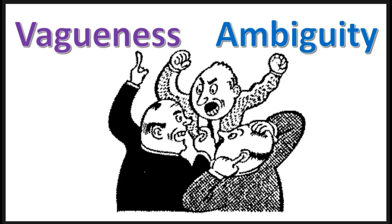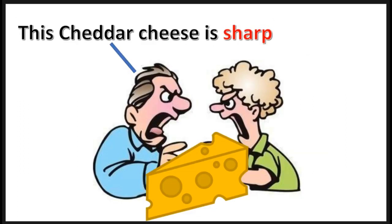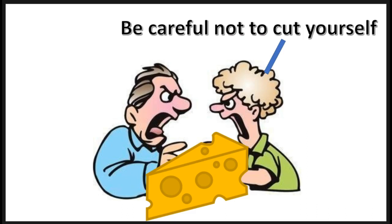These concepts are important to our study in logic because people often dispute over confusion in vagueness and ambiguity. For example, Jack says this cheddar cheese is sharp. Jill says, well, you better be careful not to cut yourself.